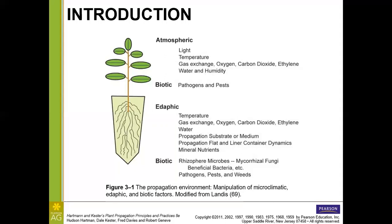Typically when they're sold to the nursery, the nursery will grow them up a little bit bigger. Or sometimes unrooted liners are sold and the customer will root them themselves. Also under biotic, considering the below-ground factors, we have some beneficial bacteria and mycorrhizal fungi, things like plant growth promoting bacteria. But we could also have weed seeds that can germinate from our substrate or potting soil, as well as pathogens or pests like root aphids or nematodes.